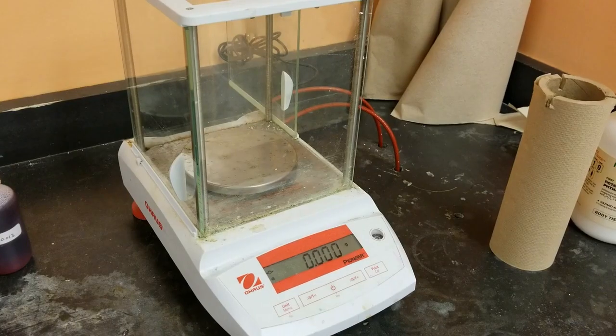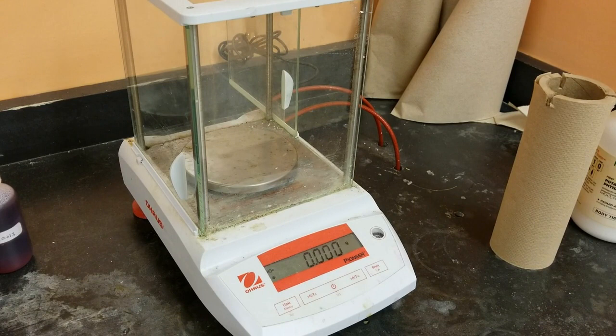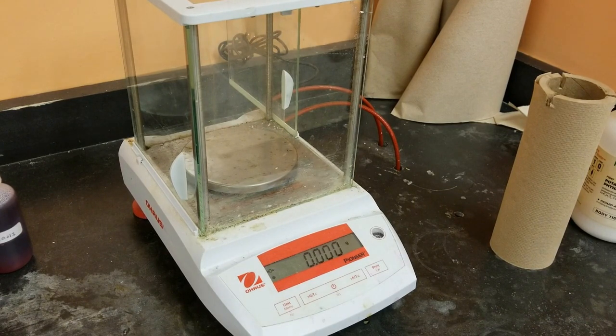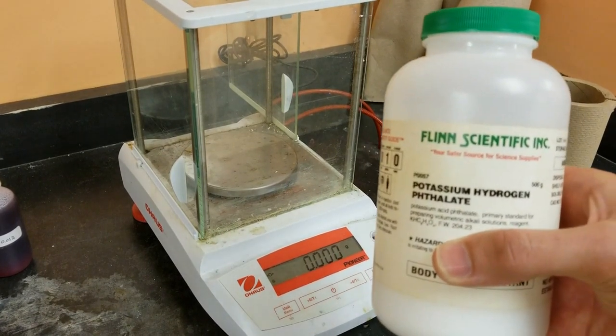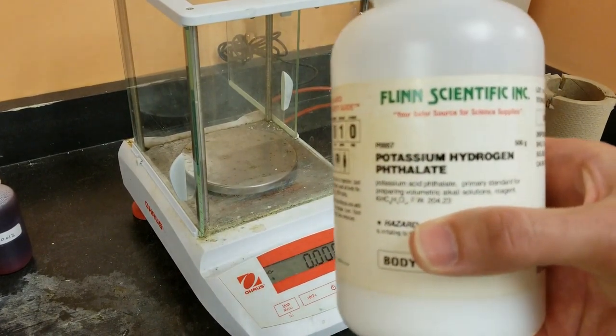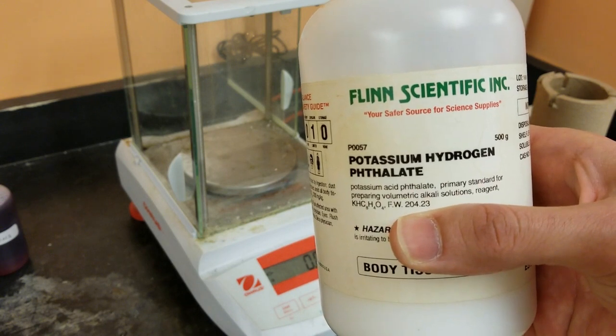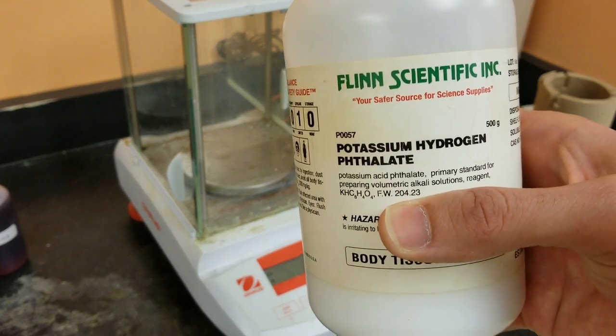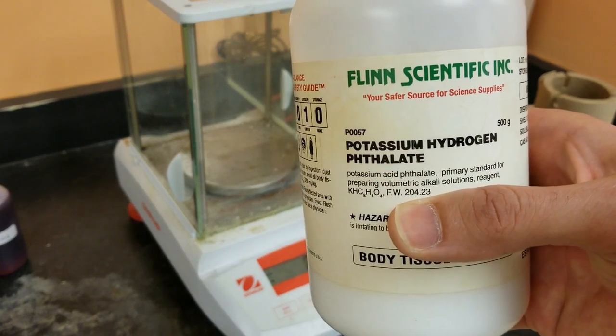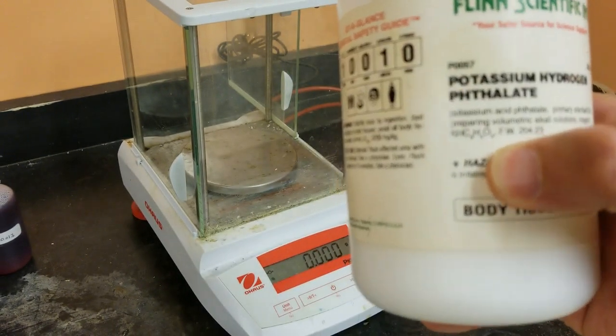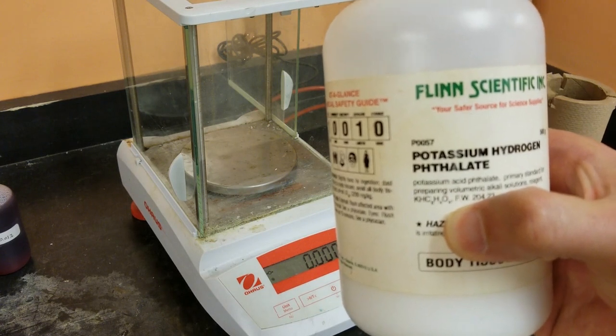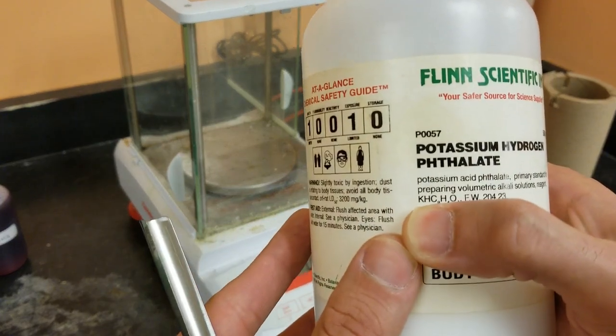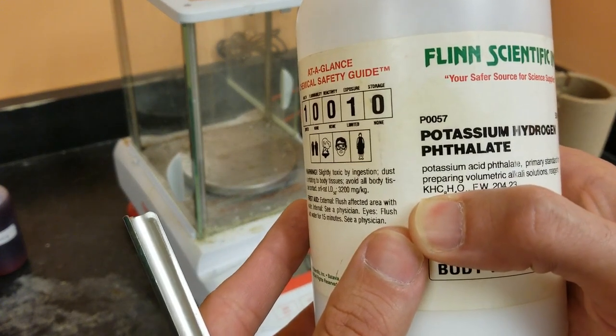All right, we're over at the analytical balance to weigh out our powdered acid. So our powdered acid is something called potassium hydrogen phthalate. You can see its molar mass, its formula weight, is 204.23 grams per mole. Its formula is here. It's an acid because it loses that hydrogen after the potassium.